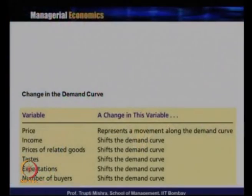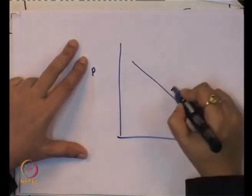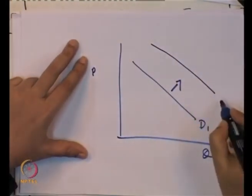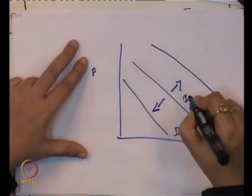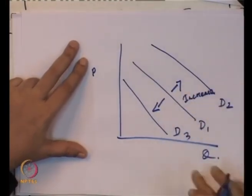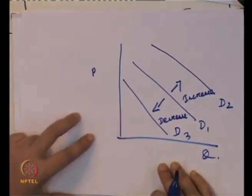Similarly, for other variables — whenever there is a change in price of related goods, taste and preference, or any other non-price factor — the demand curve shifts right if quantity demanded increases, and left if it decreases. So, generally: increase in demand shifts the curve to the right, and decrease in demand shifts it to the left.